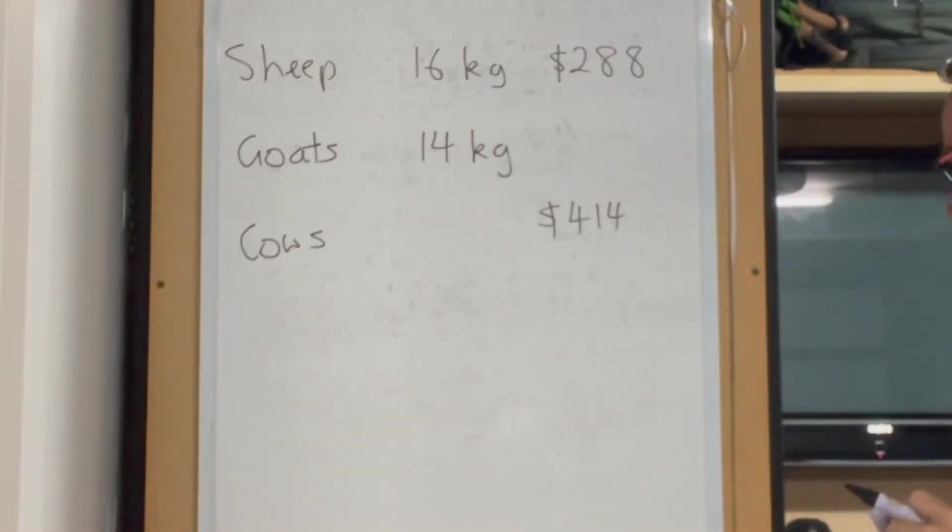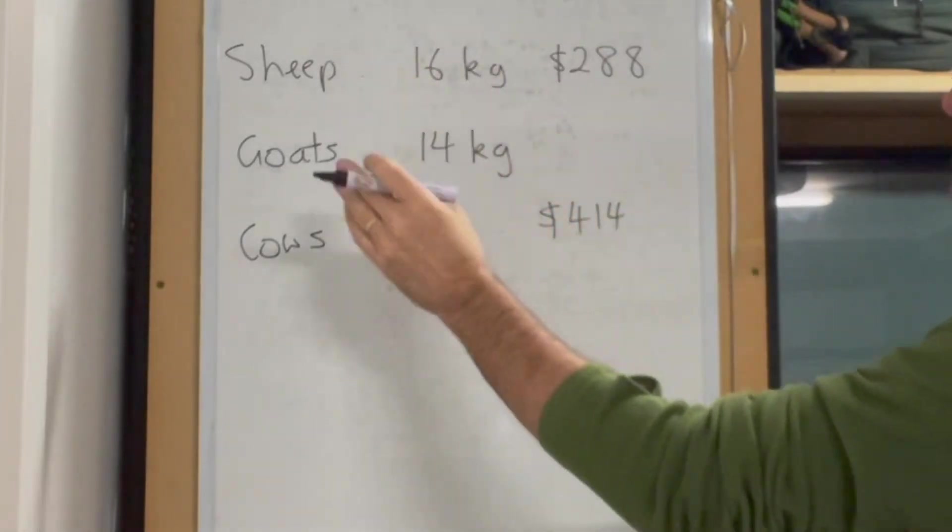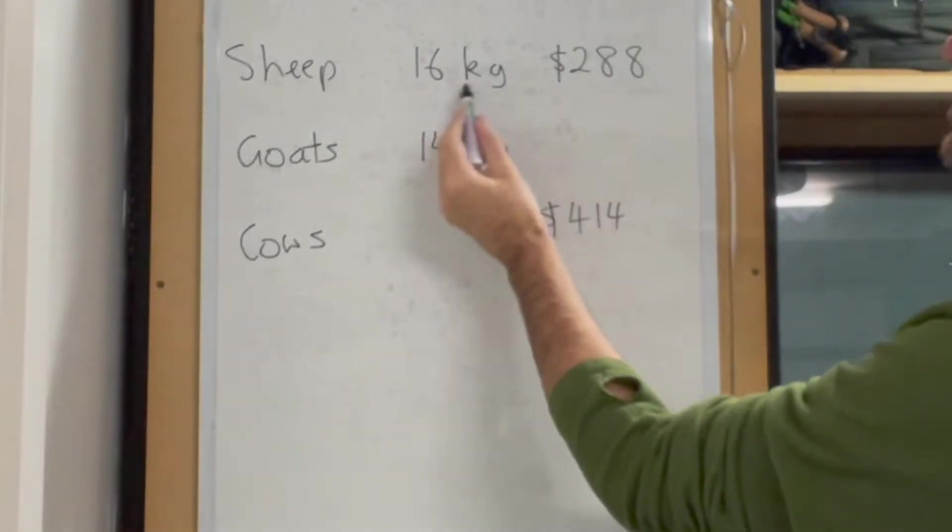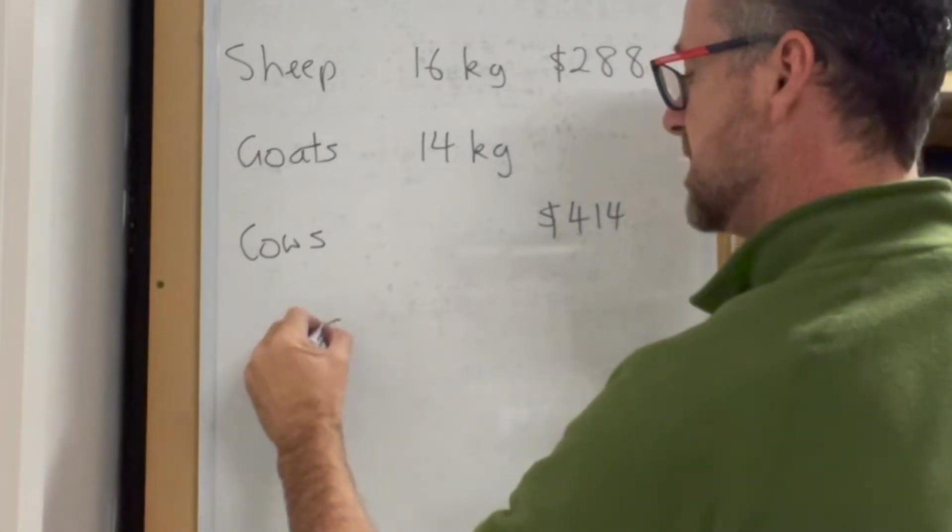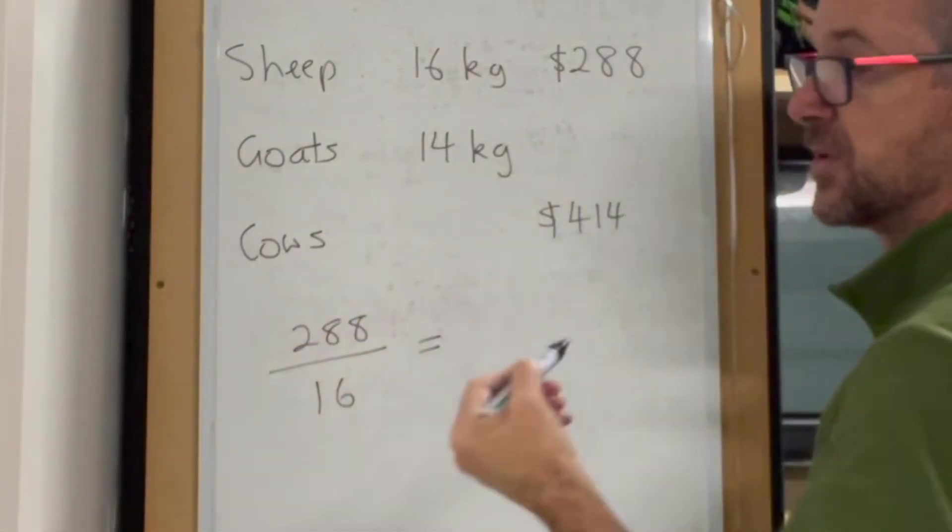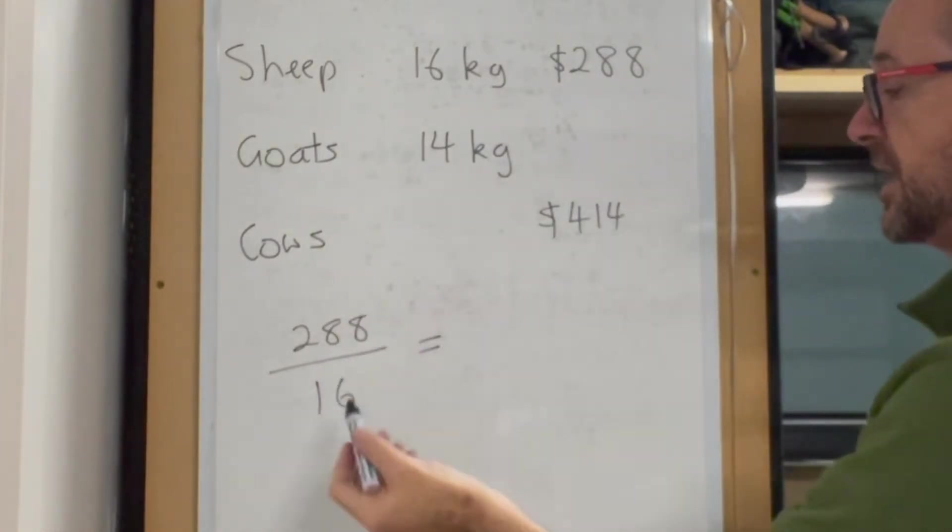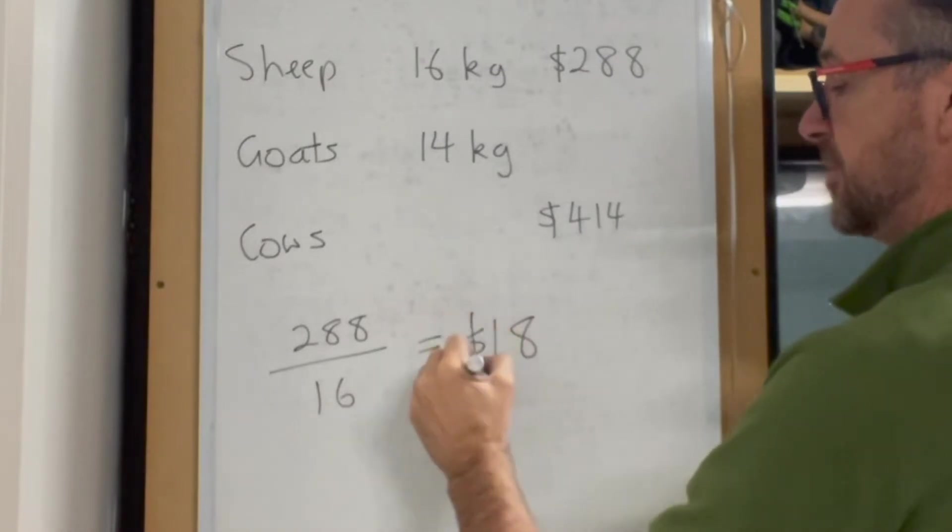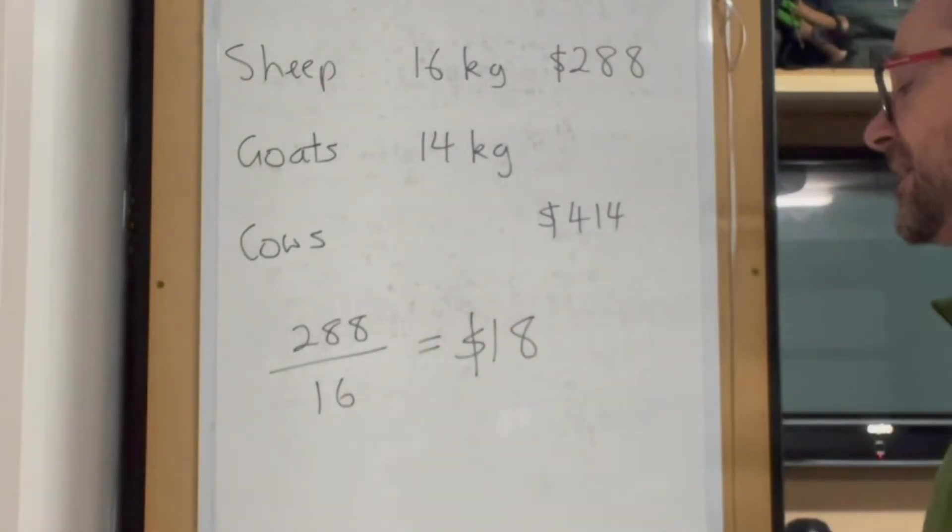Here we have animals - sheep, goats, and cows - eating grain per day. We're asked to calculate the cost in grain per kilo. We're given these two values, so 288 divided by 16 equals 18. It's a cost element, so that's $18.